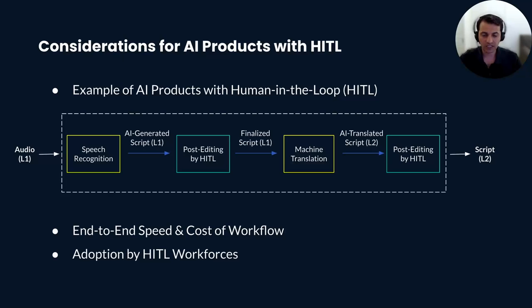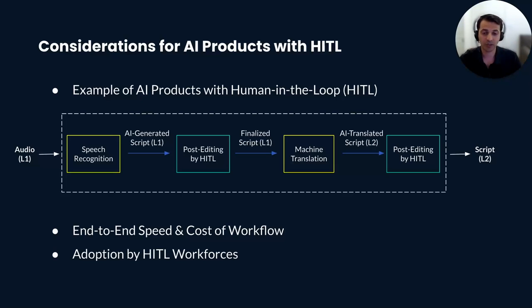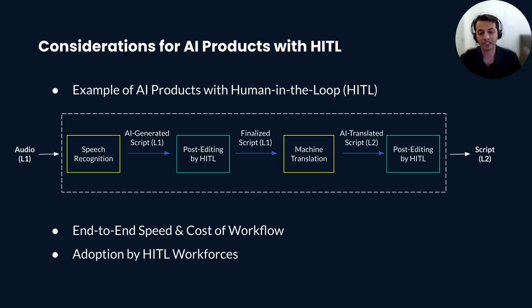As you see in this example, there are at least two rounds of human-in-the-loop in our workflow. There could be additional QA involved, with back-and-forth in many industries. But let's say just two rounds of HITL to achieve 100% accuracy of transcribing English audio to a French script.